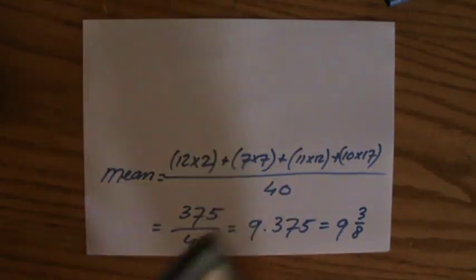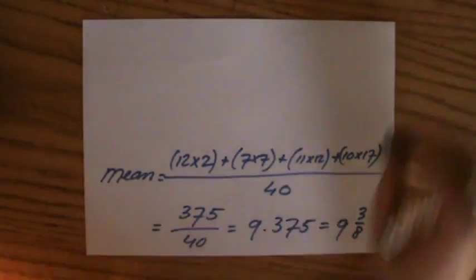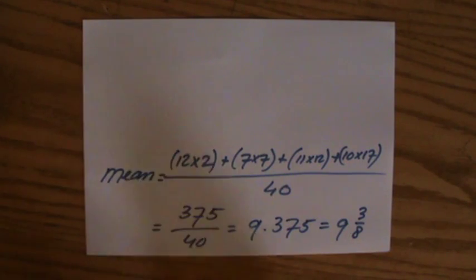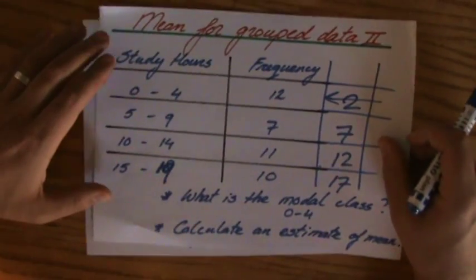Just checking that. 9 and 3 over 8. Or you could have said probably correct would be 9.38, three significant figures. Okay, so 9 and 3 over 8. That was exactly what I expected.